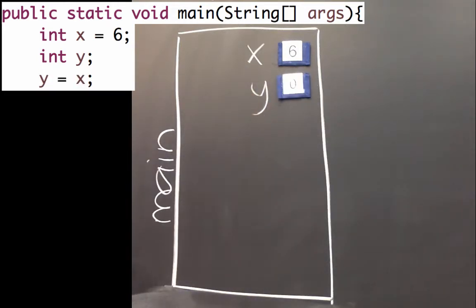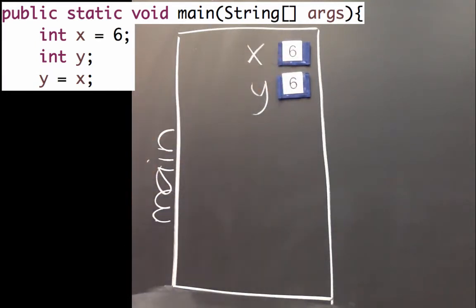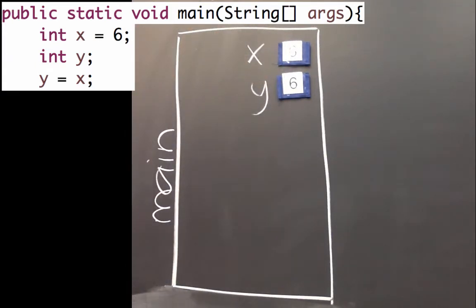Then if we say y equals x, y will get the value of x. So it gets a copy of what's in our x variable. It's important that we think about y equals x as gets, because y gets the value of x.